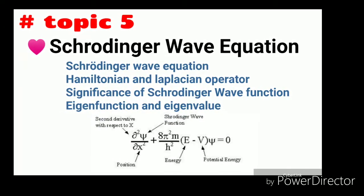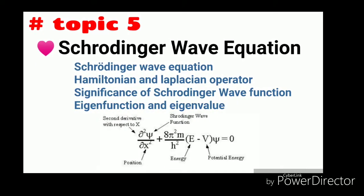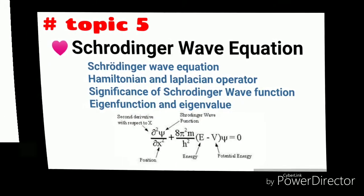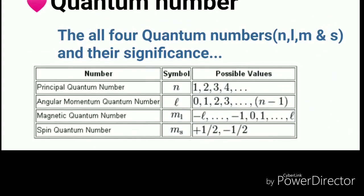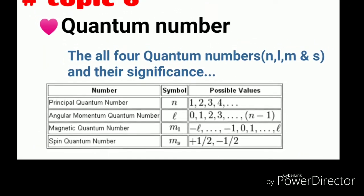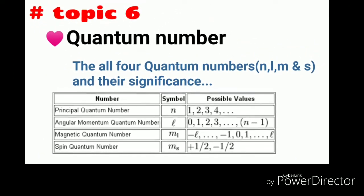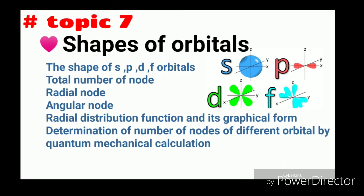Next, quantum numbers - all four quantum numbers, that is n, l, m, s and their significance. You need to read from here. The next topic, the seventh topic, is shapes of orbitals.